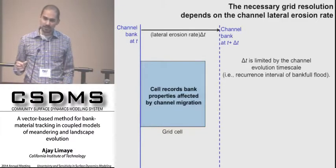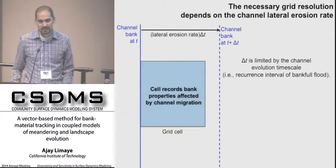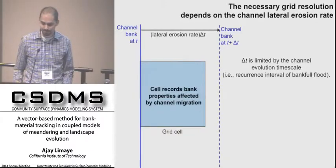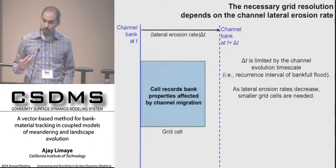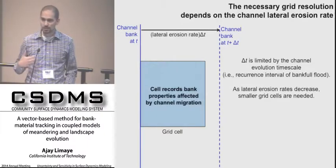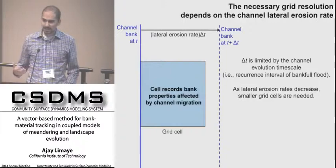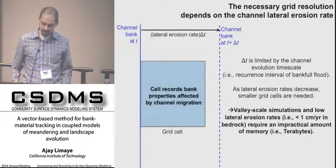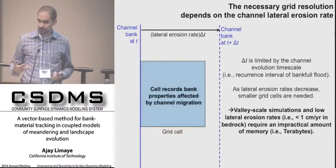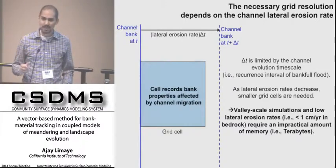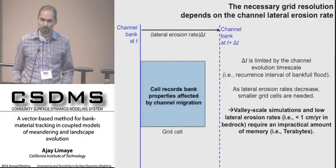Often there are physical reasons to fix the time step — for channels, it would commonly be linked to the bankfull recurrence interval of a flood. With a fixed time step, as lateral erosion rate decreases, we need an increasingly smaller cell width to overcome the resolution issue. In bedrock river valleys, where lateral erosion rates are commonly on the order of a centimeter per year or less, and considering spatial scales of tens of kilometers of river length, this requires a very dense grid — potentially on the order of terabytes of memory.